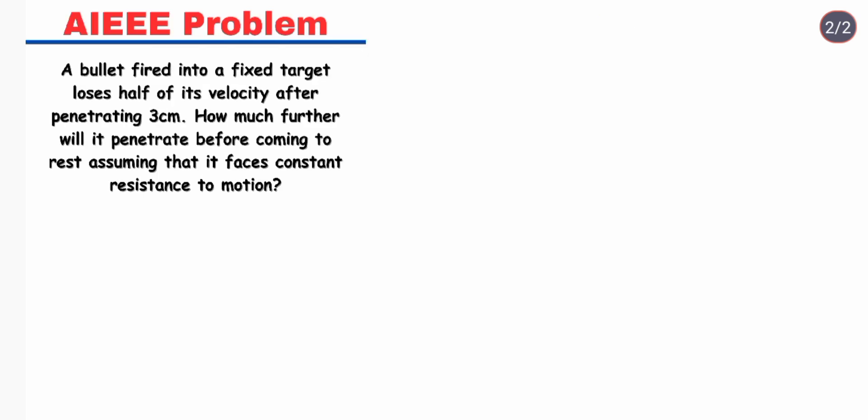So let's start. Here a bullet is fired into a fixed target. Suppose this is our target and A is the point where the bullet enters the target, B is the point where the bullet loses half of its velocity, and C is the point where the bullet comes to rest.